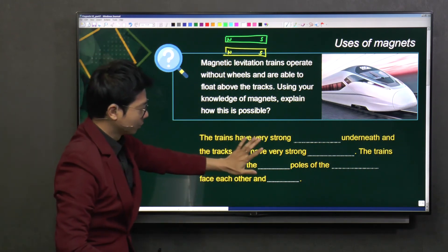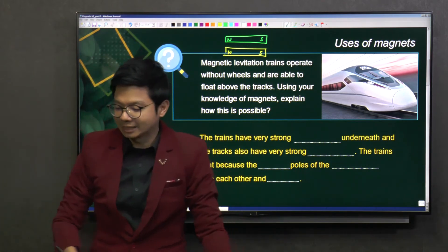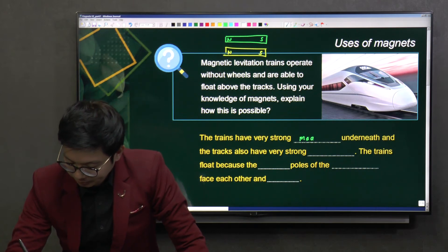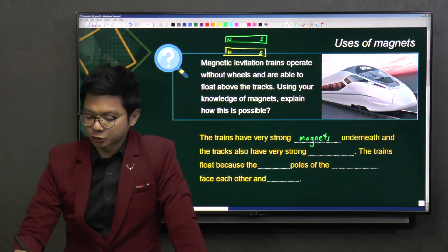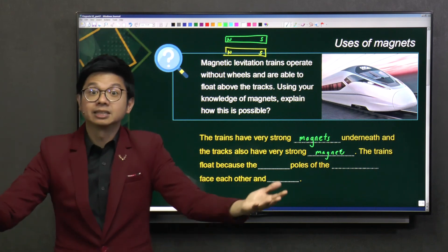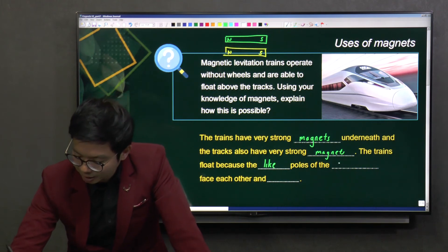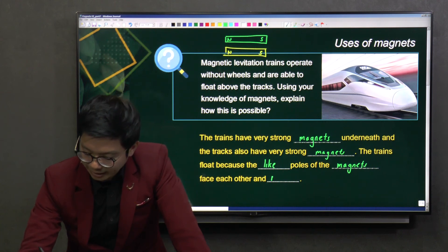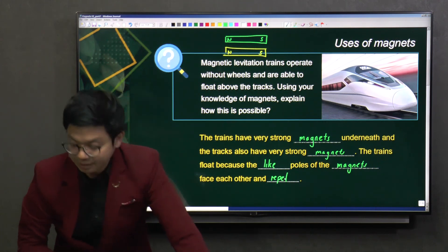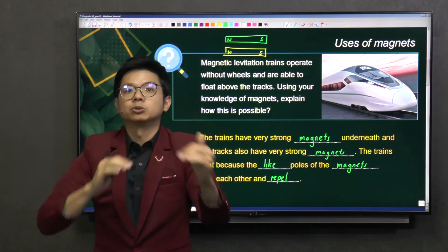So to understand better, let's fill in the blanks here. The trains have very strong magnets underneath. And the tracks also have very strong magnets. And when the like poles are facing each other, amazing things like this happen. So the trains float because the like poles of the magnets face each other and they repel. That gives the levitation effect and they can move fast because you eliminate the friction between the two surfaces.